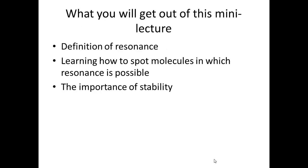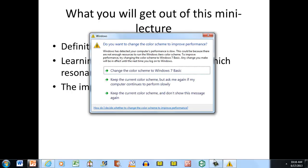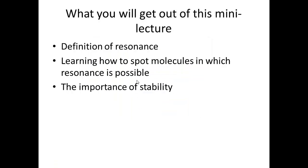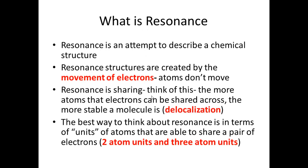Let's talk about what you're going to get out of this lecture. I'm going to give you a definition of resonance, show you how to look for molecules in which resonance is possible, and help you understand that resonance imparts stability. The more resonance forms you're able to make, the more stable the molecule will be. Everything in chemistry happens for stability — things go from less stable to more stable, and resonance is one way that molecules, particularly those with charges, stabilize themselves.